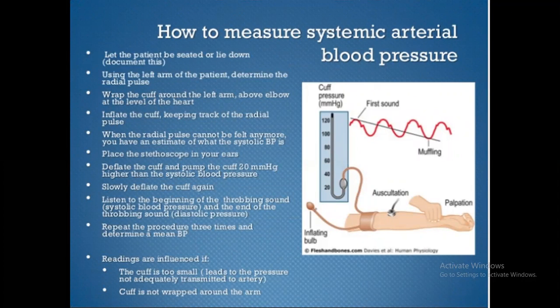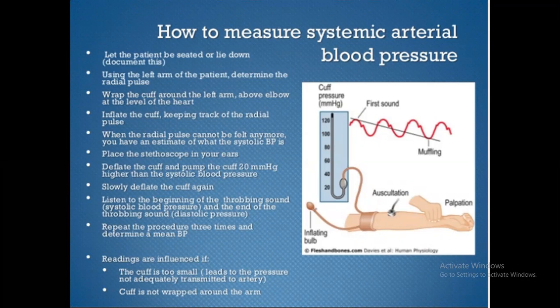How to measure systemic arterial blood pressure? Let the patient be seated or lie down. Using the left arm of the patient, determine the radial pulse. Wrap the cuff around the left arm above the elbow at the level of the heart. Inflate the cuff, keeping track of the radial pulse. When the radial pulse can no longer be felt, you have an estimate of the systolic pressure.